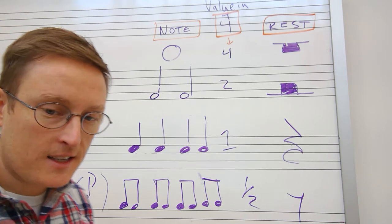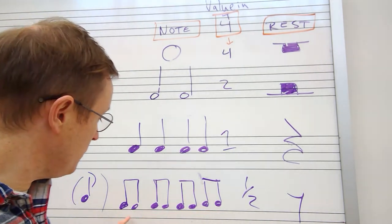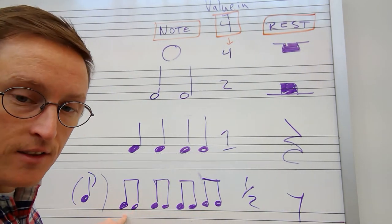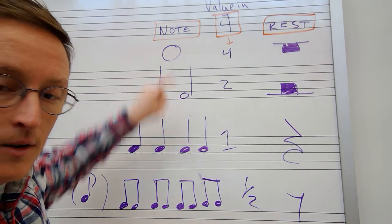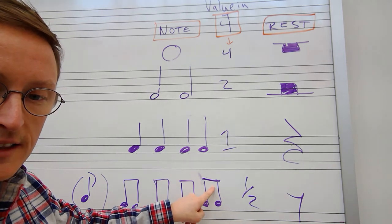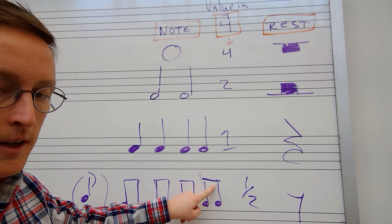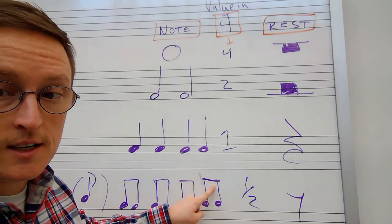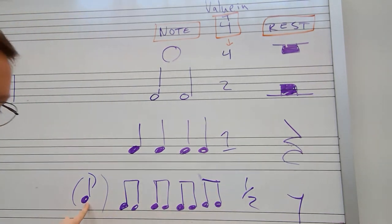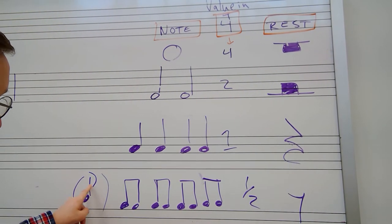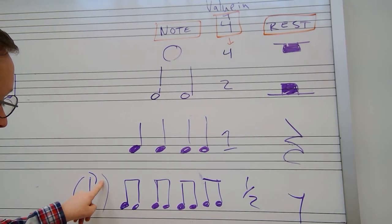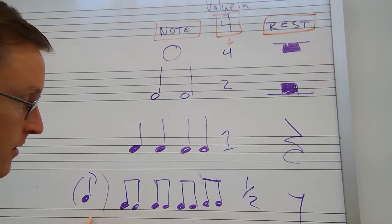Okay next we have eighth notes. So what I did here is I showed you that there are eight eighth notes in a whole note. Now when we beam them together like this there's only one beam, and that's how we know that they're eighth notes and not something else. When they're separate they look like this. They have a note head and a stem and a flag and there's only one flag. And that's how we know that's an eighth note.